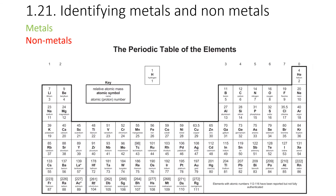For point 1.21, you have to be able to identify metals and non-metals based on their position in the periodic table. This is extremely simple: there's a zigzag line between boron and aluminium going down in steps. To the right of that line are the non-metals, and to the left are the metals. As you can see, most of the elements in the periodic table are metals — if you remember where that line is, you'll never have any problem remembering which is which.